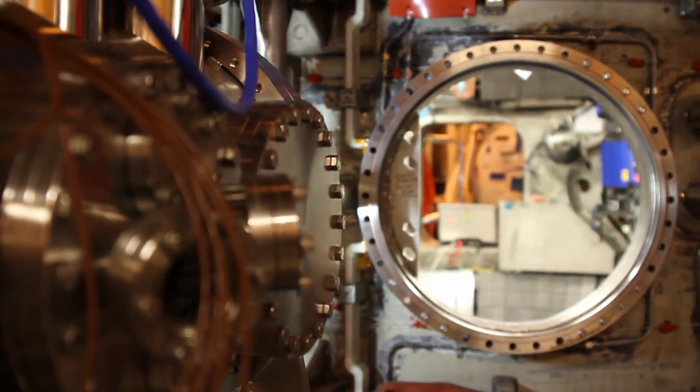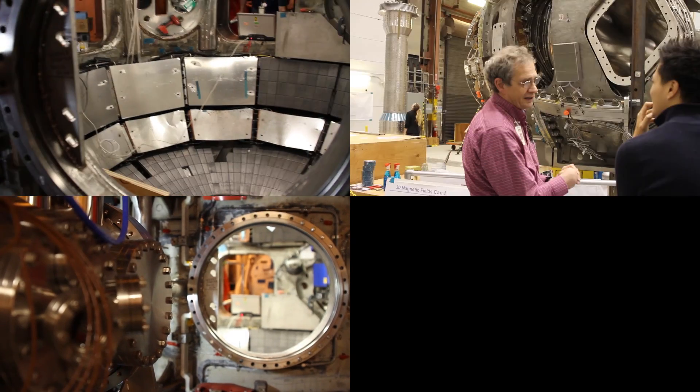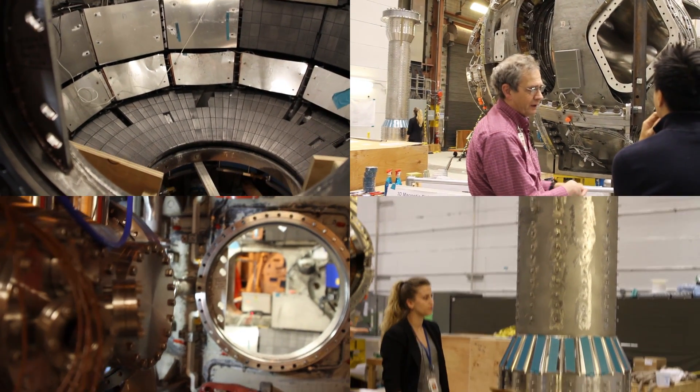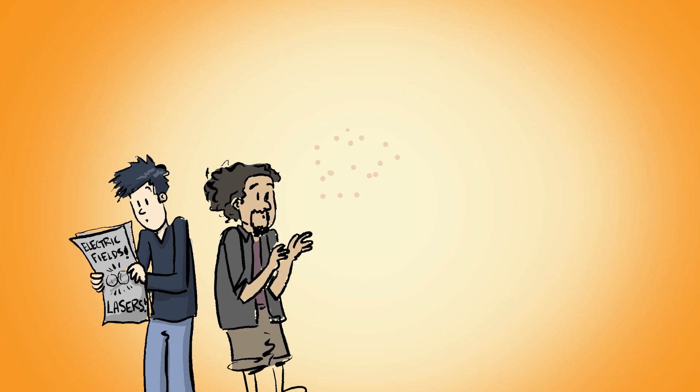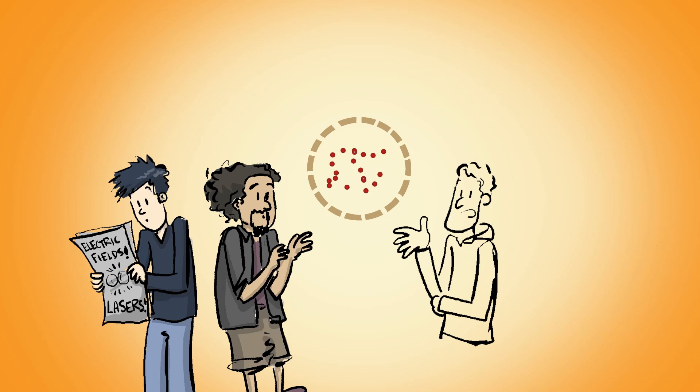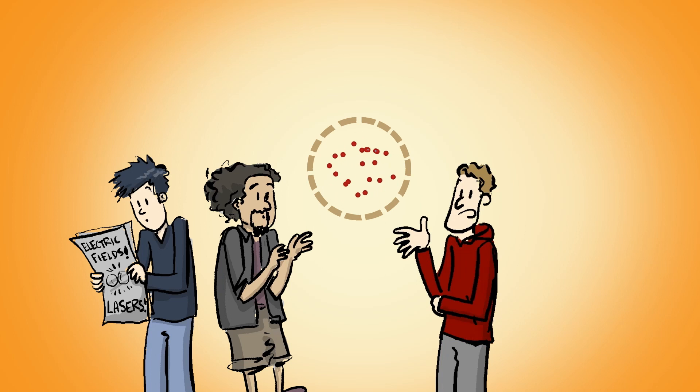So all the machines you saw today, before you talked to us, were just different ways to make a magnetic bottle. And there's other people you can read about that use electric fields, they use lasers, or whatever it might be. But in the end, because we can't use gravity, we got to do it some other way.